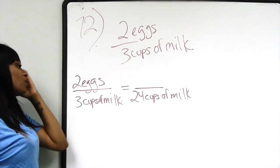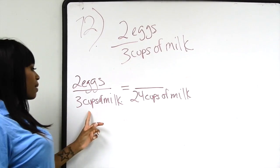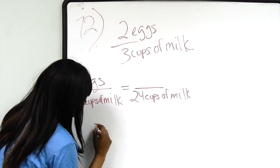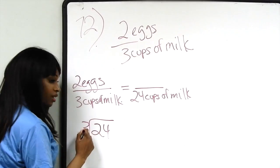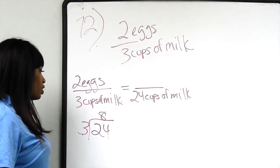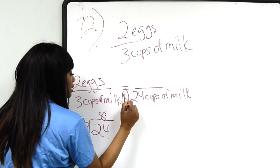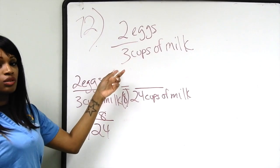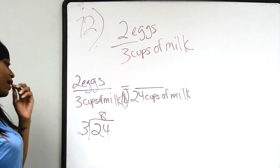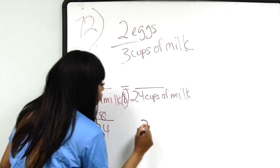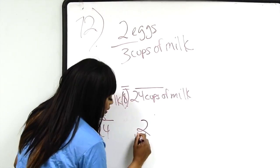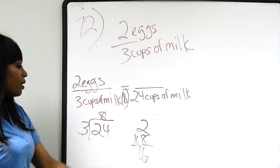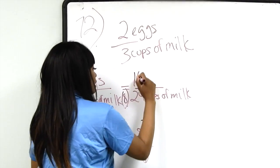We're going from three cups of milk to 24. We divide: 24 divided by three gives us eight. So we multiply by eight in the denominator, and whatever we do in the denominator we must do in the numerator to get an equivalent fraction. Two eggs times eight gives us 16. So for every 24 cups of milk we need 16 eggs.